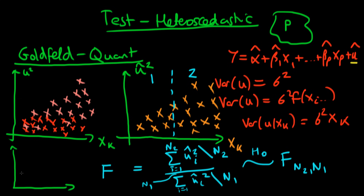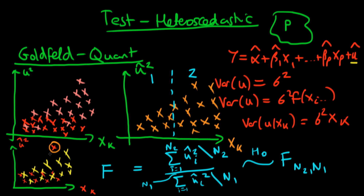Consider two examples. We might reject the null hypothesis of homoskedastic errors if errors look roughly constant along xk but there is one outlier — rejection here is driven by a single observation, not true heteroskedasticity. Contrast that with a case where there is a much more obvious and systematic pattern of increasing variance. A statistic alone can't distinguish between these two situations, which is exactly why scatter plots of residuals provide valuable insight into why we're rejecting the null hypothesis of homoskedastic errors.